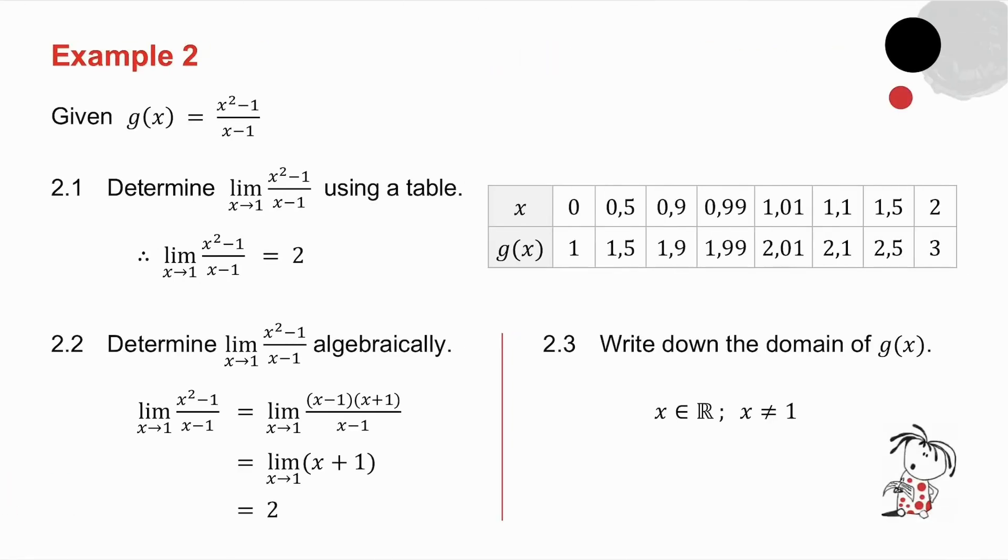In example number 2, I give you g of x equals x squared minus 1 over x minus 1. The first thing I ask you to do is to determine the limit as x tends to 1 of x squared minus 1 over x minus 1 using a table. So again, I take values of x from the left, getting closer to 1, and values of x from the right, getting closer to 1. And I substitute those values into x squared minus 1 over x minus 1.